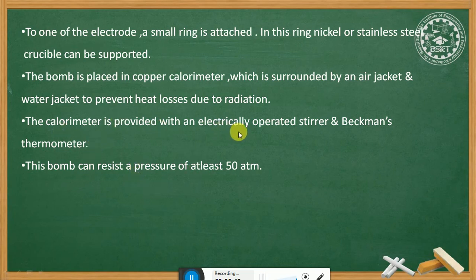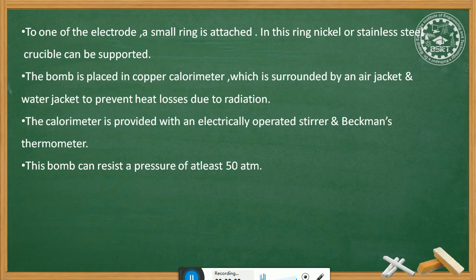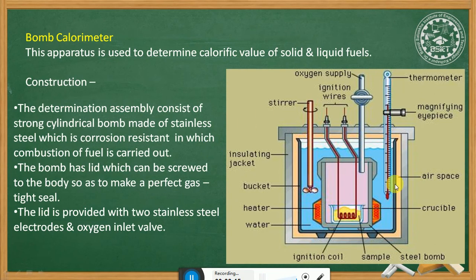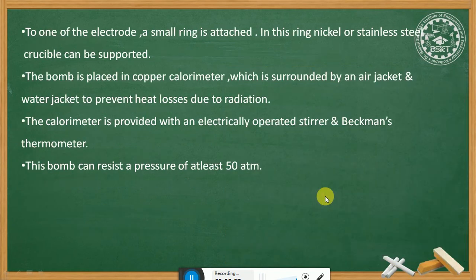The calorimeter is provided with an electrically operated stirrer and a Beckmann thermometer. The stirrer ensures heat is equally distributed in the water. The thermometer is used to record the change in temperature. This bomb can resist a pressure of at least 50 atm.